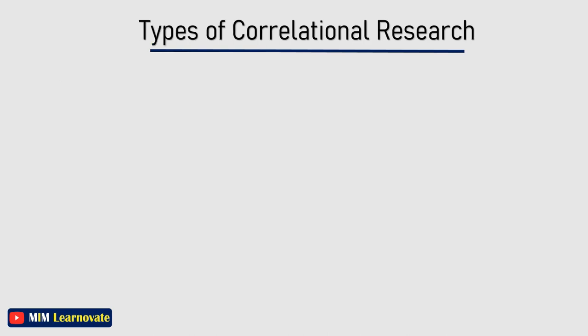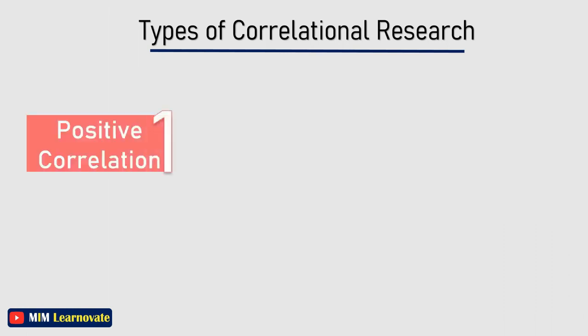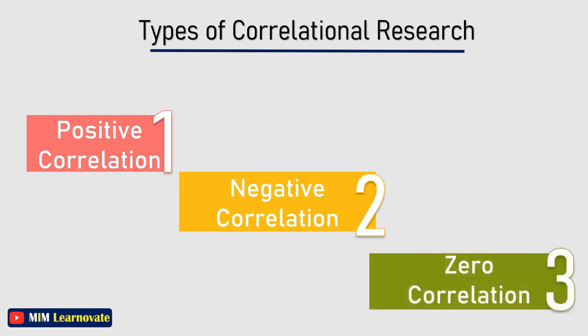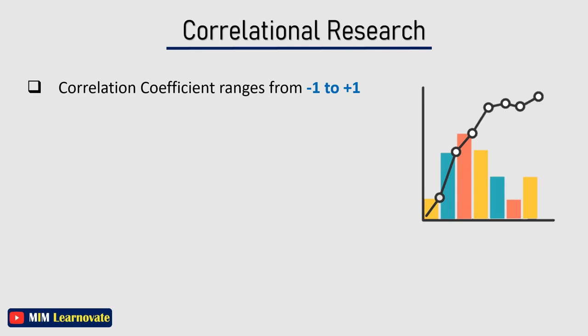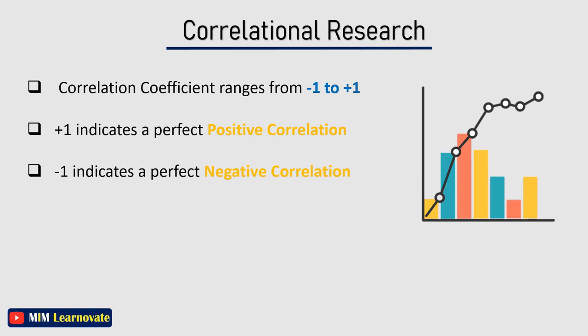There are three types of correlational research: Positive Correlation, Negative Correlation, and Zero Correlation. A correlation coefficient ranges from minus 1 to plus 1. A coefficient of plus 1 indicates a perfect positive correlation, whereas a coefficient of minus 1 indicates a perfect negative correlation between two variables. A coefficient of zero indicates no relationship between the variables under study.